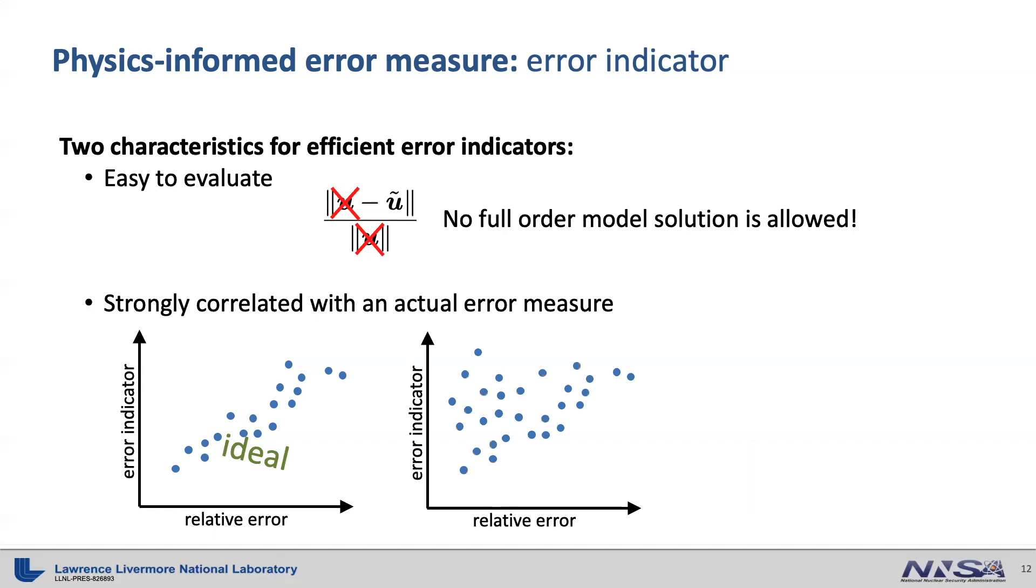Sometimes we get this kind of correlation where this region gives false negative, meaning that the indicator is saying the accuracy is bad although the actual accuracy is good. This is actually okay because it simply adds some unnecessary sampling points during the greedy algorithm. And the final set of sampling points will still guarantee the desirable accuracy.